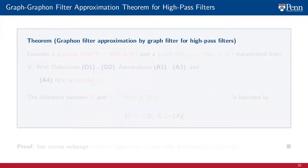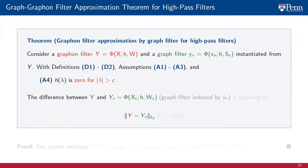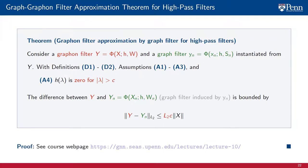We are now ready to state our next results concerning the approximation of graphon filters by graph filters for high-pass filters. Consider a graphon filter Y and a graph filter YN instantiated from Y. With definitions D1 through D2, assumptions A1 through A3, and the additional requirement that the filter has low variability around 0 and is high-pass — that is, H(λ) equals 0 for all eigenvalues with absolute value above the threshold C — the L2 norm of the difference between the graphon filter Y and the graph filter YN is bounded by the filter's Lipschitz constant L2 times the passing-band threshold C times the L2 norm of the graphon signal X. The proof is available on the course website.